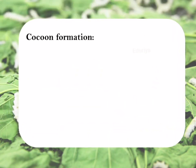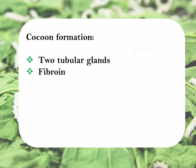Cocoon formation. There are two tubular glands present on the head of the caterpillar. These glands secrete a fibrous protein called fibrone. When the fibrone comes in contact with air, it converts into fine long threads of silk.